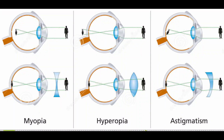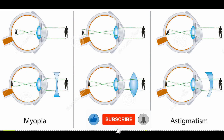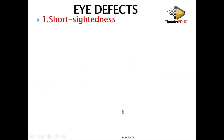Welcome back to our class. Don't forget to subscribe if it is your first time to visit our channel. We have short-sightedness — what does it mean? Short-sight means that you can see objects which are near.